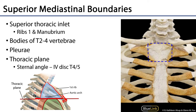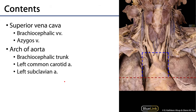We can see the rough borders of the superior mediastinum here, but keep in mind this is a little deceptive because the manubrium is back at an angle, so there's more of a wedge shape than a cube. Let's take a look at some of the contents, moving from anterior or superficial to posterior or deep.